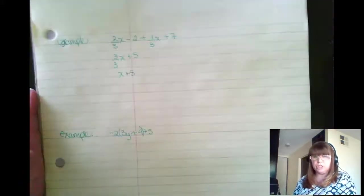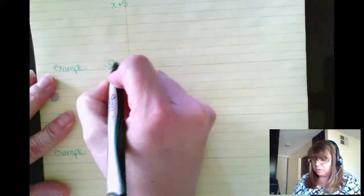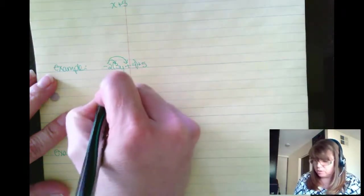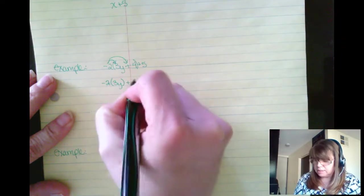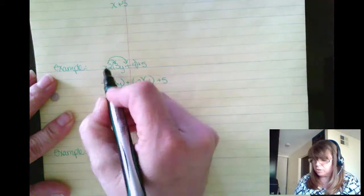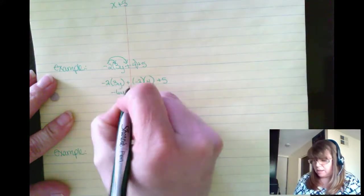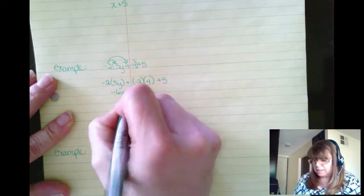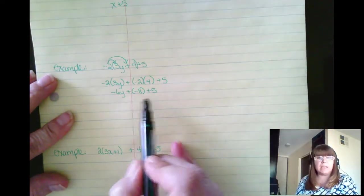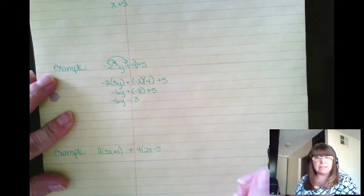Now let's try one with distribution. I'm going to distribute the negative 2 across to the 3y as well as the positive 4. So negative 2 times 3y plus negative 2 times 4, and then we can't leave off the plus 5 here. But I don't distribute the 2 over there because it's not in the parenthesis. So negative 2 times 3y is negative 6y, and negative 2 times 4 is a negative 8 plus 5. So the only like terms I have now are the negative 8 and the positive 5. So negative 6y minus 3.